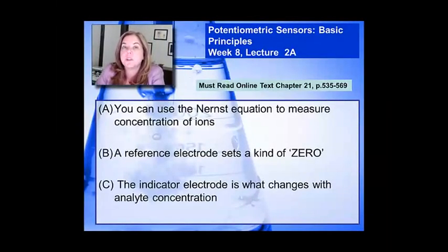I also want you to be familiar with the terminology reference electrode, indicator electrode, and junction potential, and have some sense of where and why we use all of those components in measurement of potentiometry and specifically how to think about a junction potential.